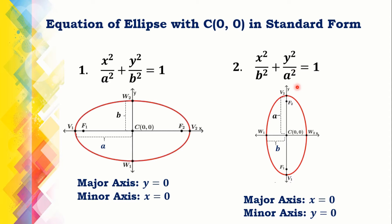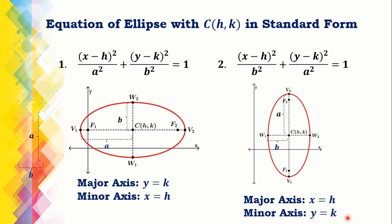When A squared is the denominator of y squared, the major axis is a vertical line with equation x equals 0, and the minor axis is a horizontal line with equation y equals 0. The standard form of the equation of an ellipse with center at (h, k) is given as the square of the quantity x minus h over A squared plus the square of the quantity y minus k over B squared equals 1.